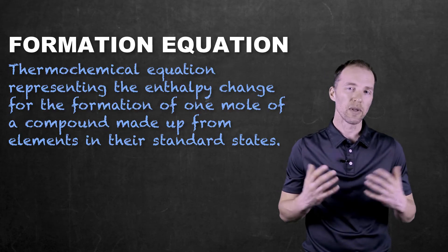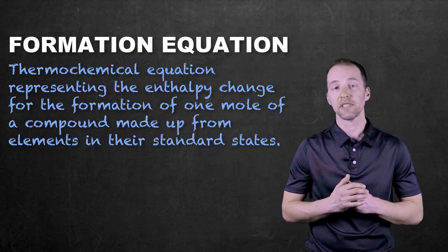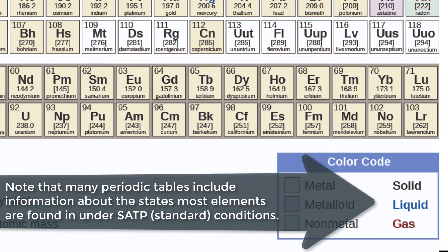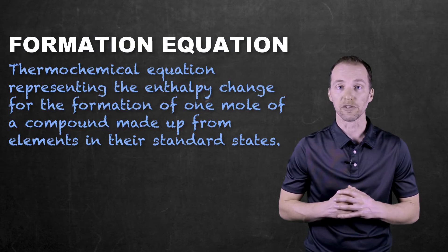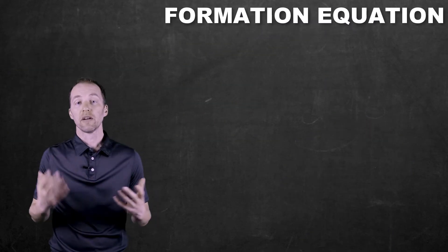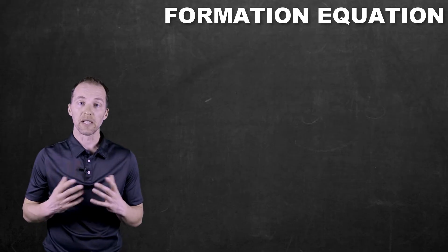How do we know what the standard states of elements are? If you take a look at most periodic tables, most of those elements — at least in terms of how they're represented in their states — occur at standard conditions. For some periodic tables it might look like a symbol indicating what state that element is found in, and for others the color of the elemental symbol may differ depending on the state it's found in.